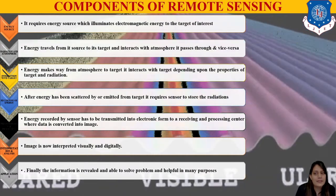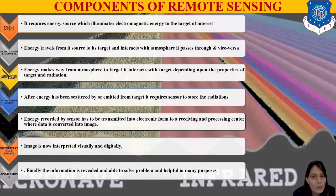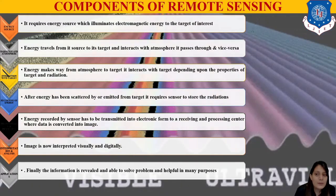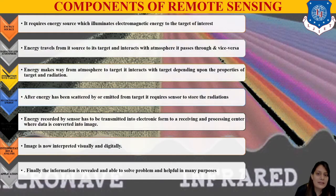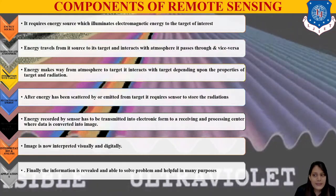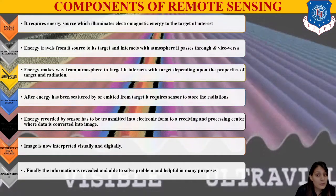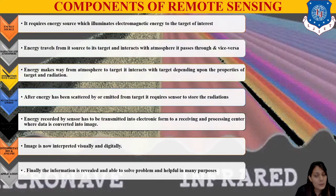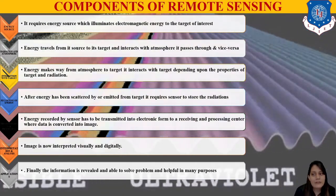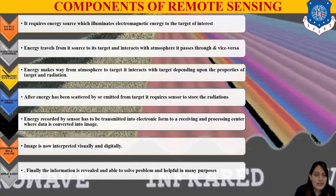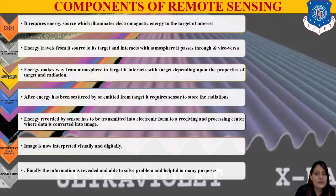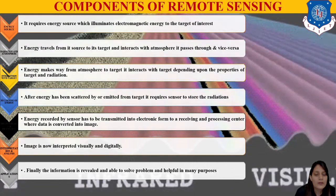The very first component is the energy source, which illuminates electromagnetic energy to the target of interest — that is the sun. Remember these components occur in sequence only; you cannot mix up the sequence. The first is the energy source, then radiation and atmosphere. Energy travels from its source — the sun — to the target and interacts with the atmosphere.